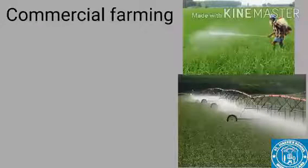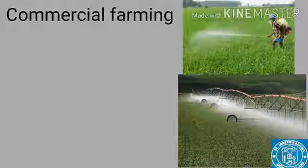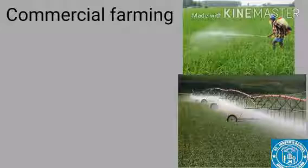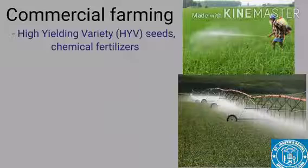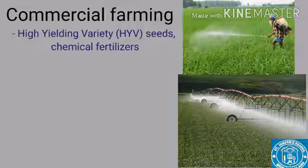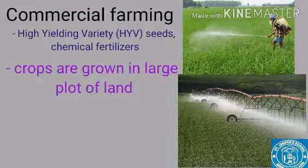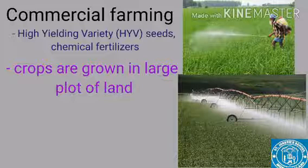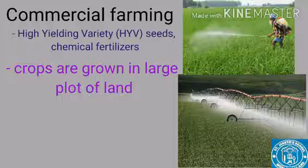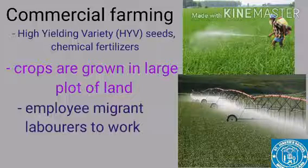The next topic is commercial farming. Just by the name itself, we can understand that the crops produced in this type of agriculture are used for business purposes and not for self-consumption. The farmers use high-yielding variety seeds, fertilizers, and modern technologies to obtain high productivity. Crops for commercial purposes are grown in large areas of land, and unlike primitive agriculture where the family or community works, in commercial farming the landowners employ hired laborers.